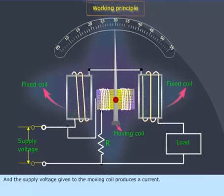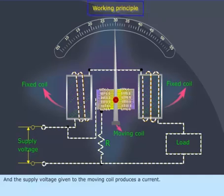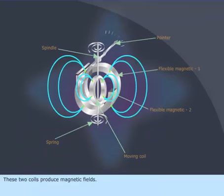And the supply voltage given to the moving coil produces a current. These two coils produce magnetic fields.